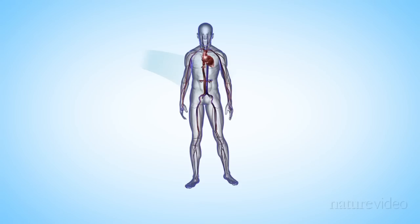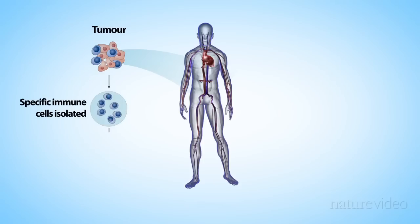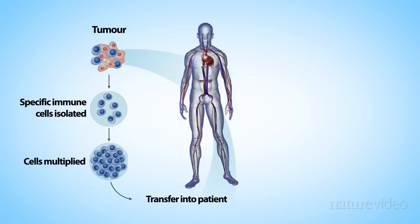One approach is to take immune cells directly from the tumor. It's difficult to extract enough cells, but the advantage is that the cells have already learned to recognize the tumor.